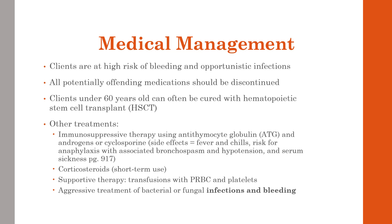Aplastic anemia can be successfully treated in many cases. For clients 60 years of age or younger who are otherwise healthy, a hematopoietic stem cell transplant from a compatible donor can cure aplastic anemia. In other situations, treatment with immunosuppressive therapy using ATG and androgens or cyclosporine in combination is used. ATG is obtained through rabbits or horses immunized with human T lymphocytes and works by killing T lymphocytes — the cells attacking the bone marrow — allowing the bone marrow to rebuild its stem cell supply and blood counts to rise.